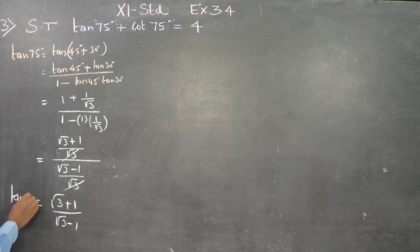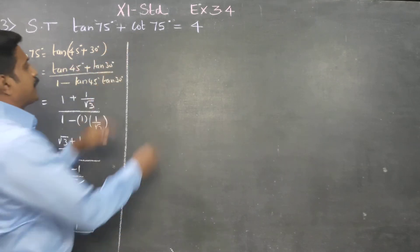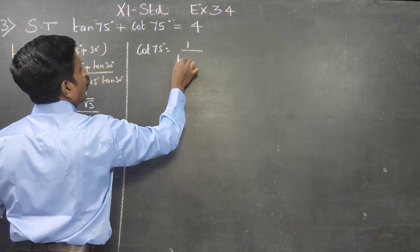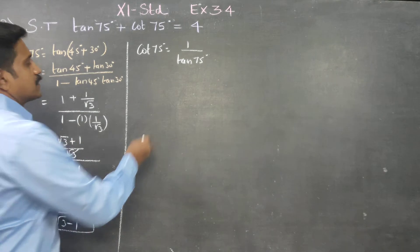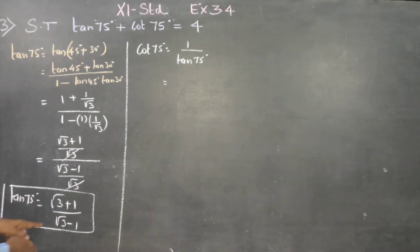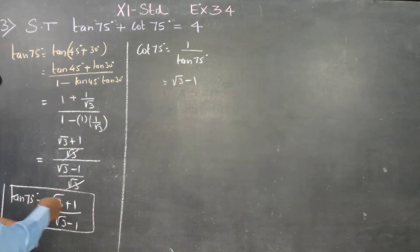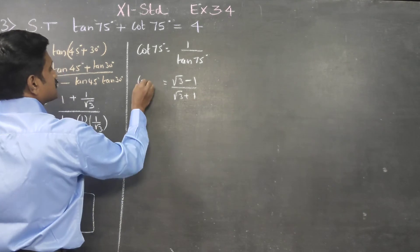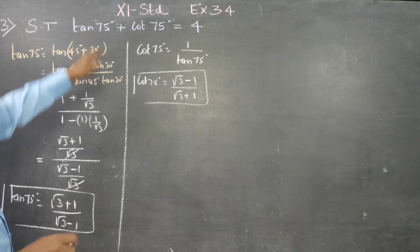This is tan 75 degrees. Next, I am going to find cot 75. Cot is the reciprocal of tan 75. Taking the reciprocal of tan 75, the numerator and denominator swap, giving cot 75 equals root 3 minus 1 over root 3 plus 1.